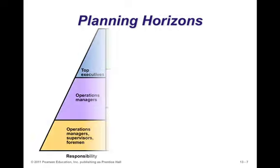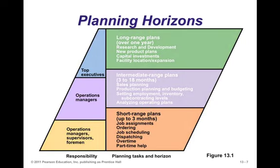Let's look at the planning horizon to see where aggregate planning falls. Top executives deal with long-range strategic plans — major capital decisions such as new products, capital investment, facility locations, and process choices. Operations managers look at intermediate-range plans of 3 to 18 months: sales planning, production planning, budgeting, and employee levels.